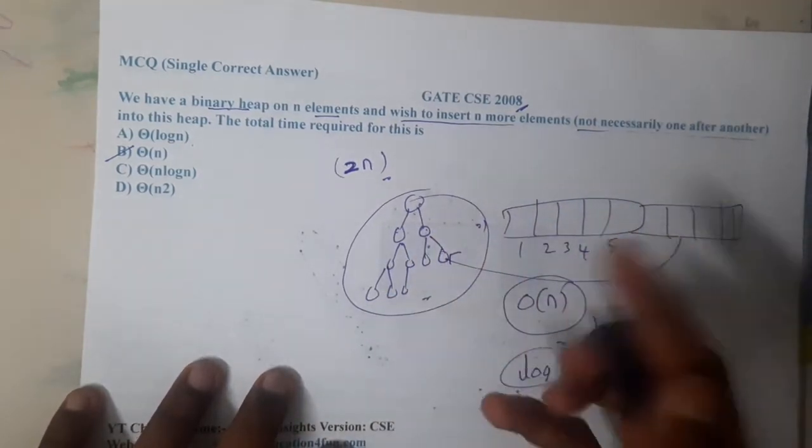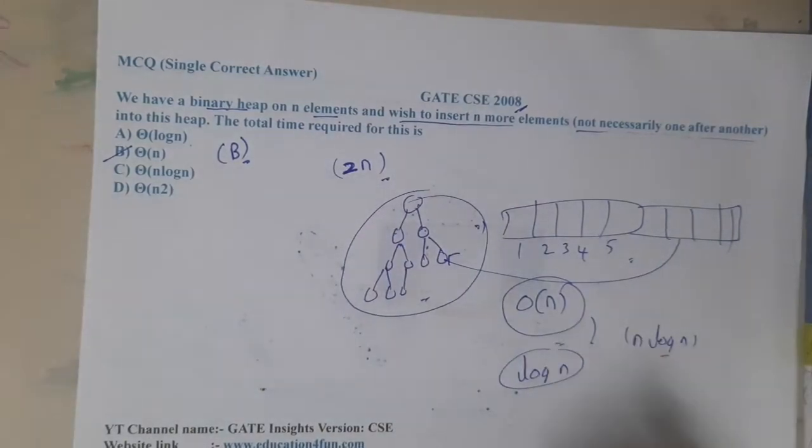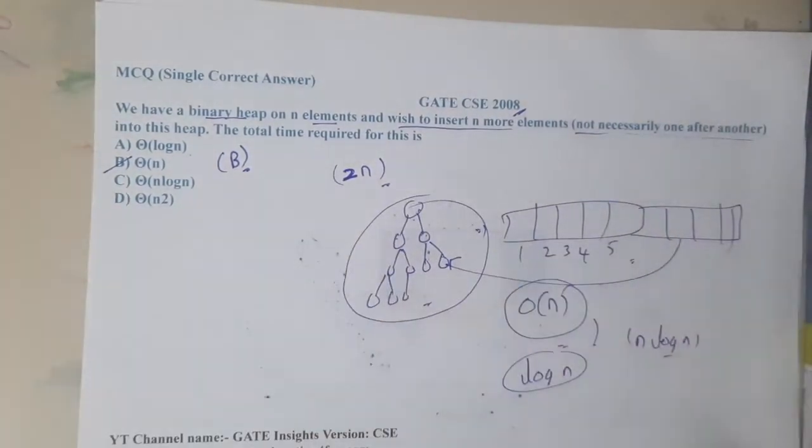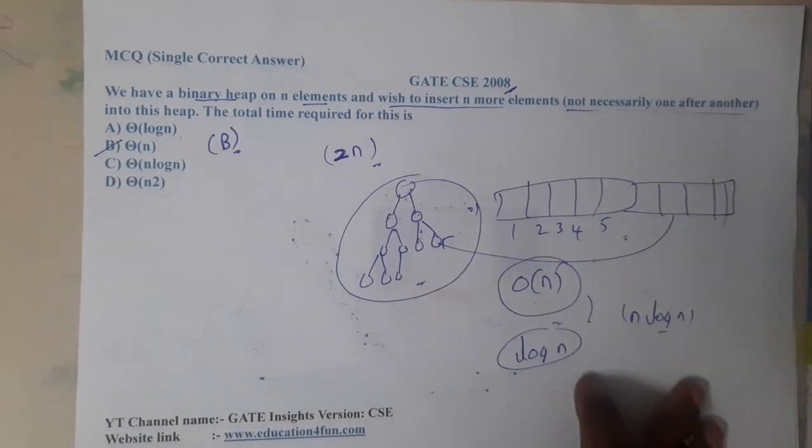That is the reason why option B will be the correct answer. It's a quite simple question, but the only confusion is a few students might answer n log n because they blindly assume that it is a min heap or max heap. So now I hope everyone got a clear idea with respect to this question.